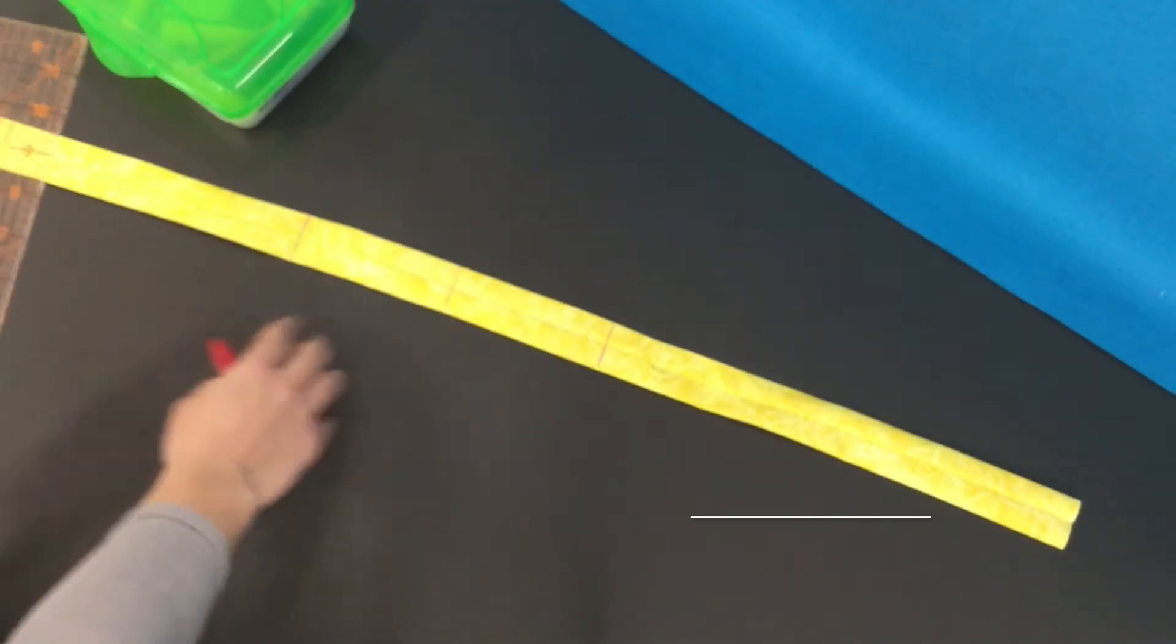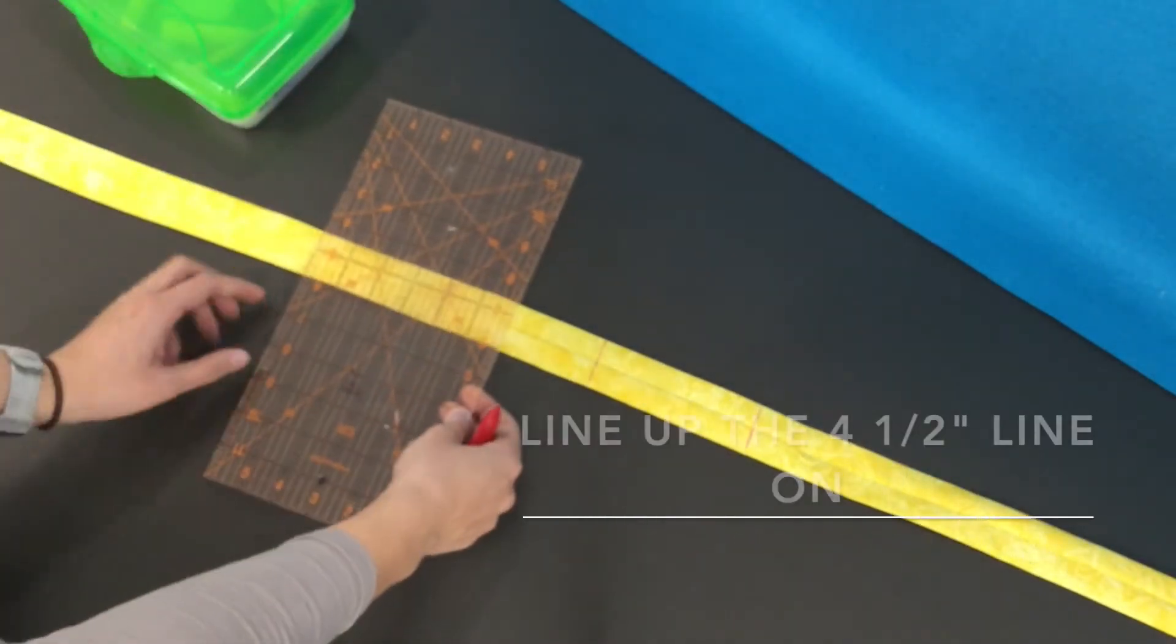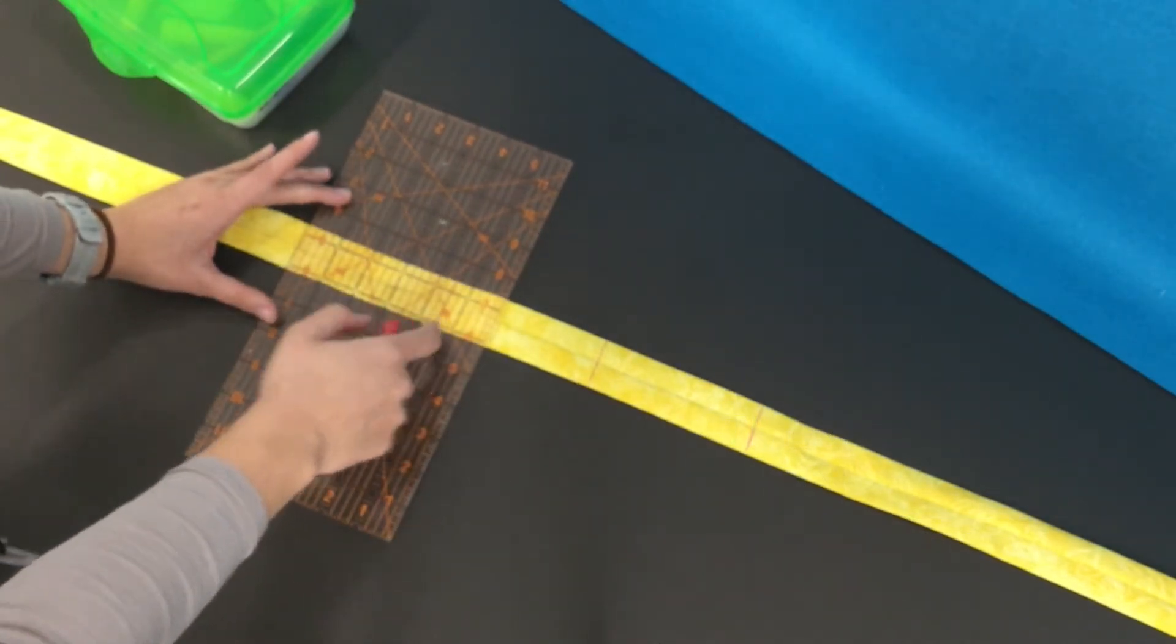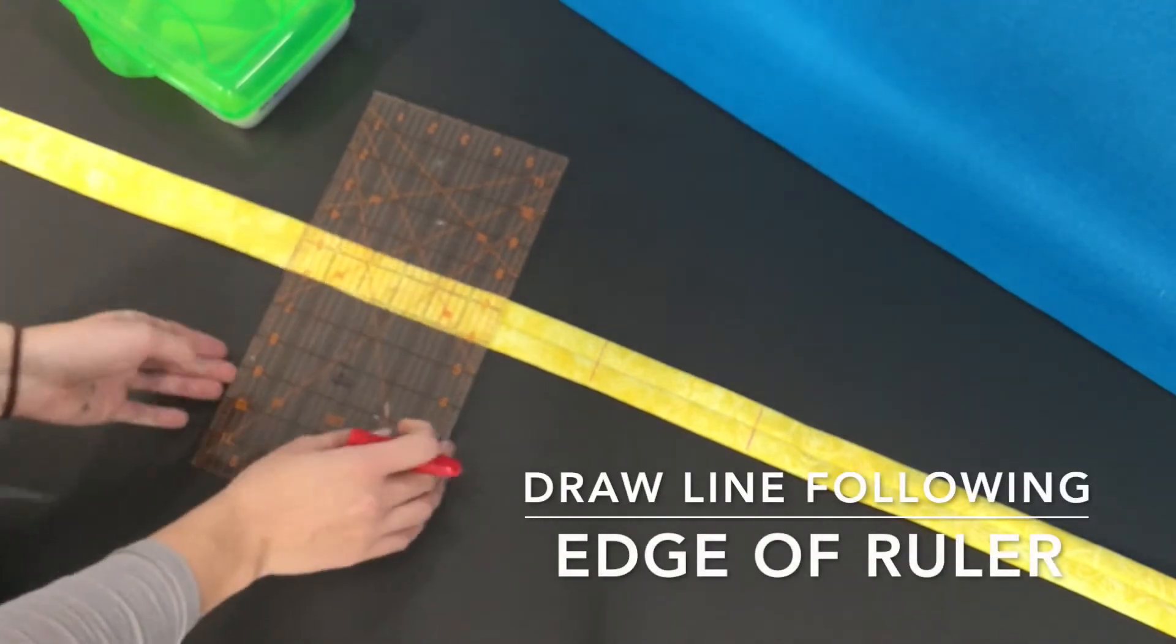I need to go the other way. So from center, I'm just going to turn my ruler. My four and a half line is still right there. I'm going to stick it right there. Hold my ruler steady.